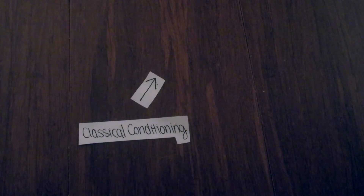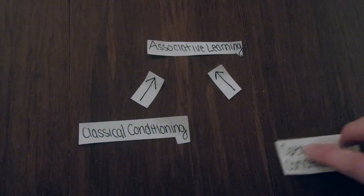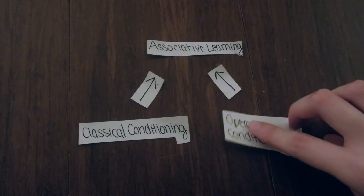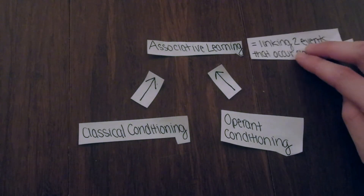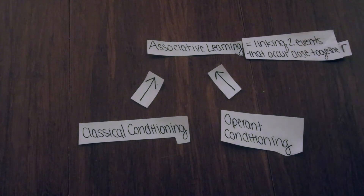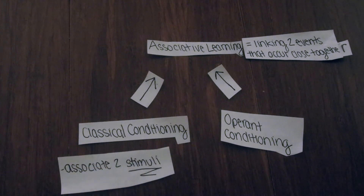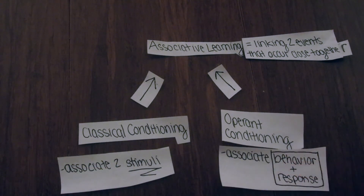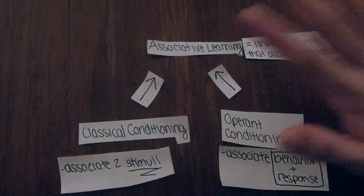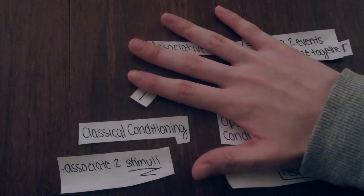Classical conditioning makes up one part of associative learning, with the other being operant conditioning. What defines associative learning is merely the linking of two events that occur close together. In classical conditioning, the association is between two stimuli, while operant conditioning is between behavior and response. In this video, I will only be focusing on the classical conditioning portion of associative learning.